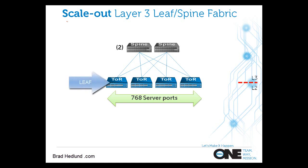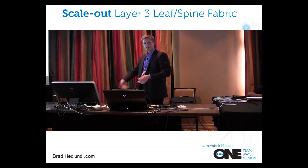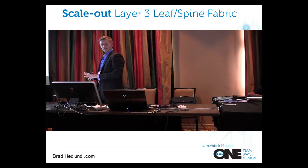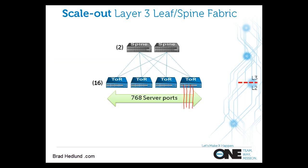What's the difference between a leaf switch and a spine switch? A leaf switch is what provides access to the fabric — this is where I connect my servers, firewalls, load balancers, or a link to a router to get to the outside world. On a leaf switch, certain ports are dedicated to access and certain ports are dedicated to building the fabric, linking to a layer above as an interconnect. That interconnect is the spine. Unlike a leaf switch, all ports on a spine switch are dedicated just to connecting to other leaf switches. There are no access ports — I'm not connecting servers, load balancers, or firewalls to the spine switch. It's just a backbone interconnect for the leaf switches.